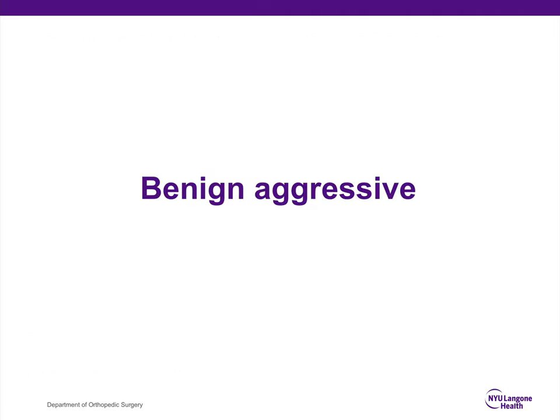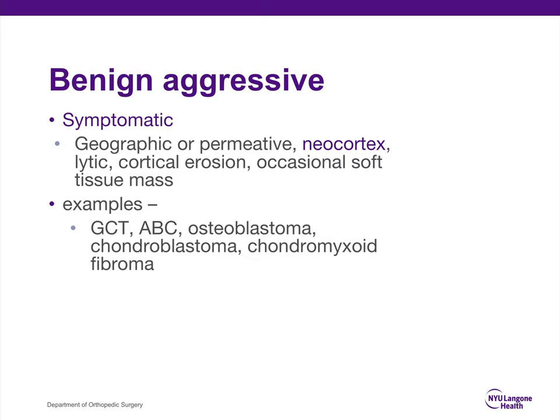The third group is the benign aggressive tumor. These tend to be symptomatic, geographic or permeative, and the hallmark is that they develop a neocortex. They sometimes have cortical erosion and occasional soft tissue mass. The five benign aggressive bone tumors are giant cell tumor, aneurysmal bone cyst, osteoblastoma, chondroblastoma, and chondromyxoid fibroma. When you see an aggressive lesion on imaging, those are the five that should come to mind — location and appearance will help narrow it down.